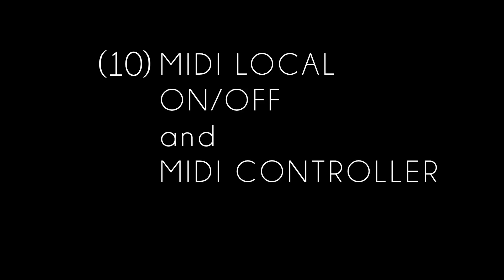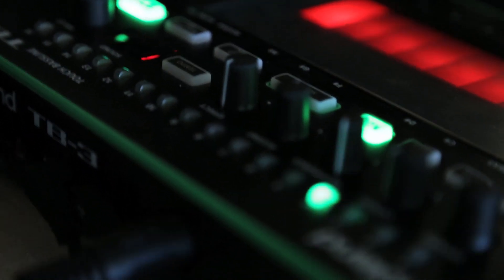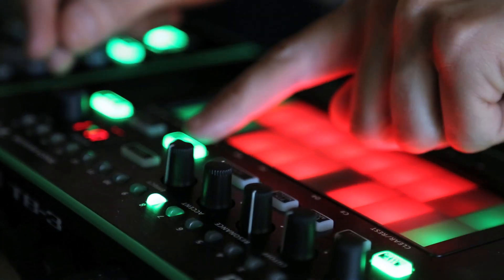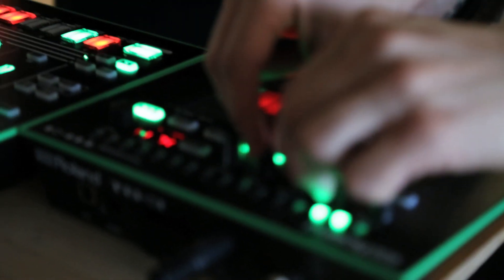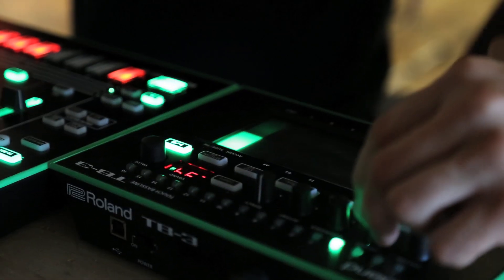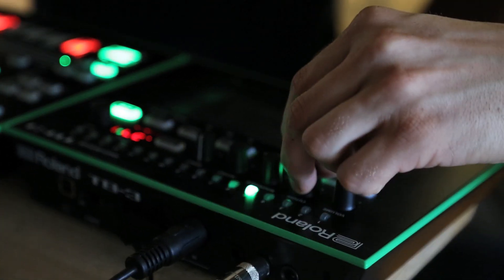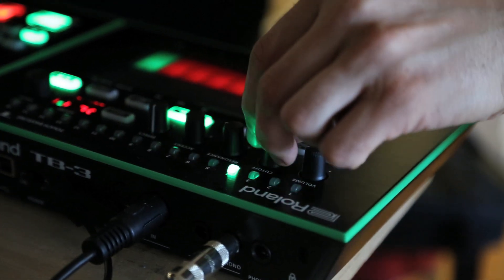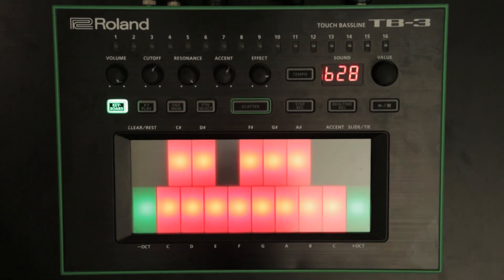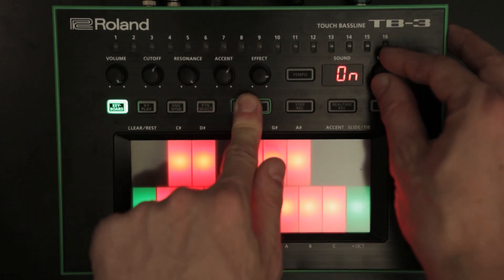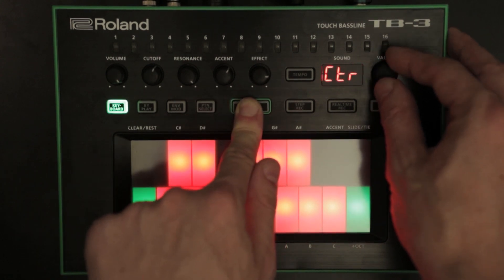Function 10: MIDI Local On/Off and MIDI Controller Mode. Several local modes have been included for studio or live use. Apart from the standard local on and off settings, there is now a MIDI controller mode which lets you send MIDI notes and control changes from the TB3 without using the internal sound engine for any MIDI messages coming in. Stop the sequencer, hold the scatter button and turn the value dial to choose between on, off, and controller.